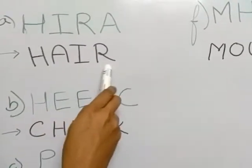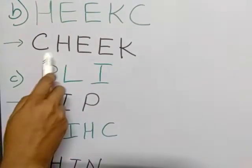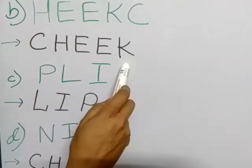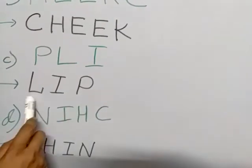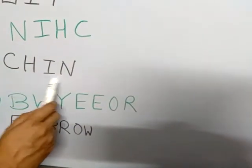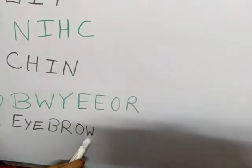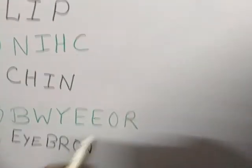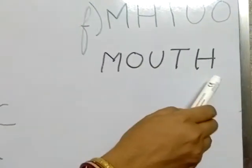Again: Hair — H-A-I-R. Cheek — C-H-E-E-K. Lip — L-I-P. Chin — C-H-I-N. Eyebrow — E-Y-E-B-R-O-W. Mouth — M-O-U-T-H.